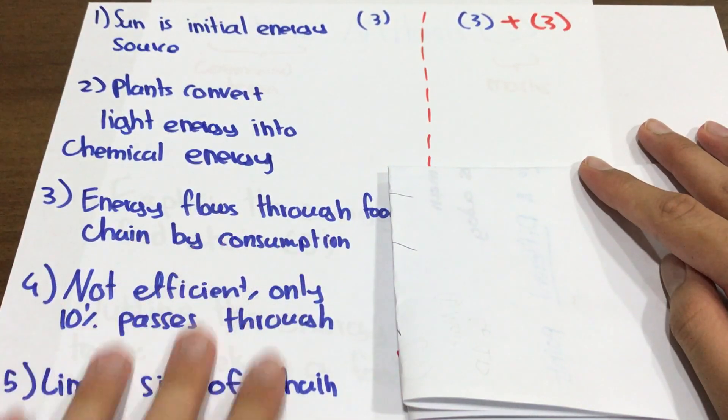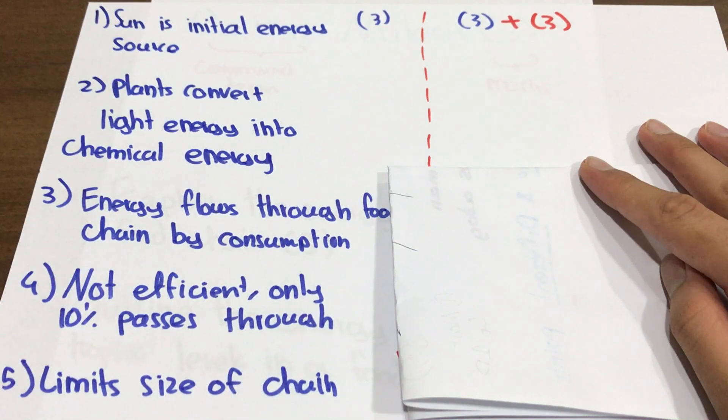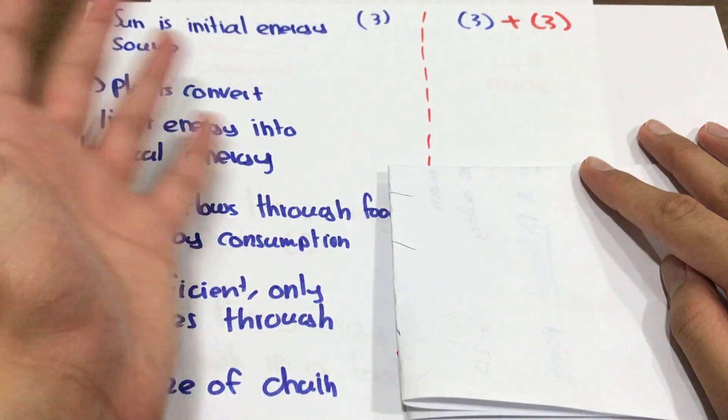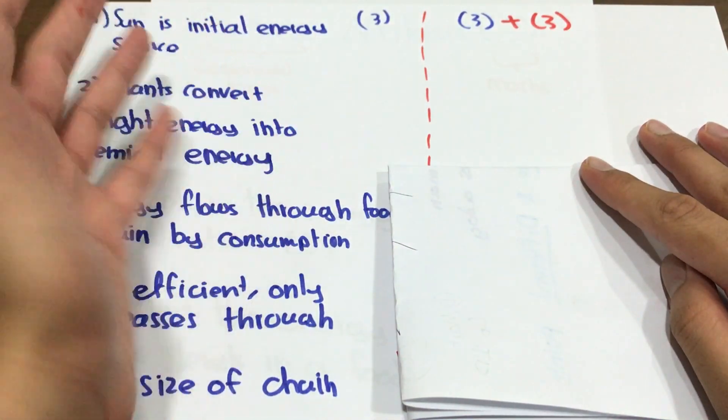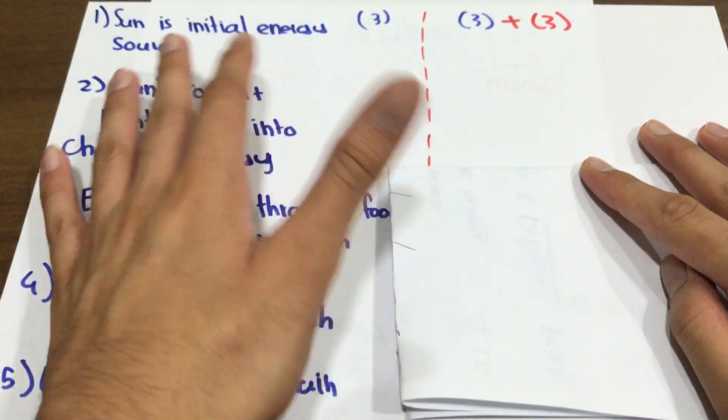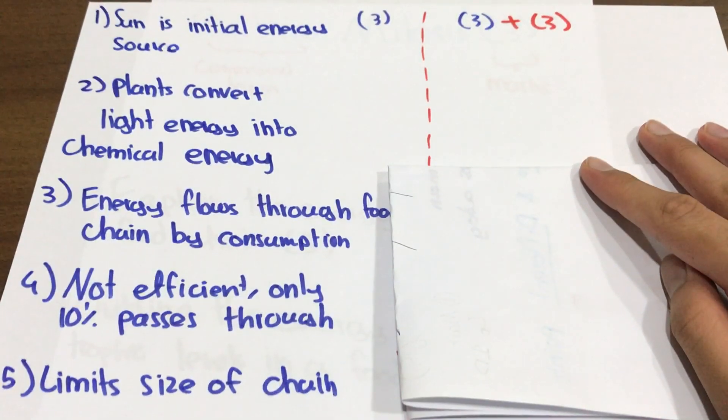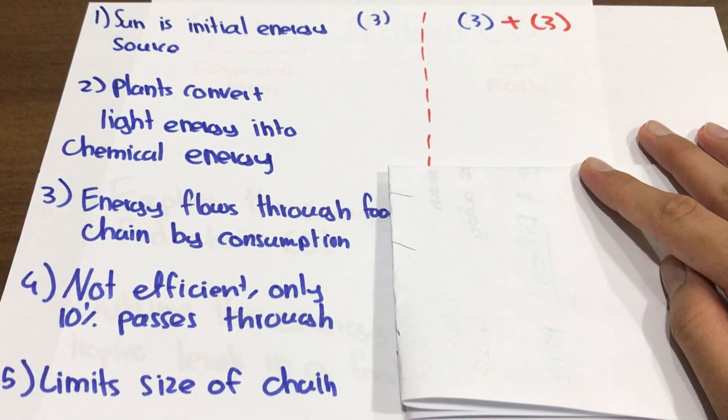That's what we're trying to illustrate here. We have five main points of energy transfer in food chains, enough for three marks. Now I just need to add three more points of detail. Let's figure out which points we can elaborate on. First one: Sun is initial source of energy - that's self-explanatory. We could go into photosynthesis, but that's not what the question is calling for.